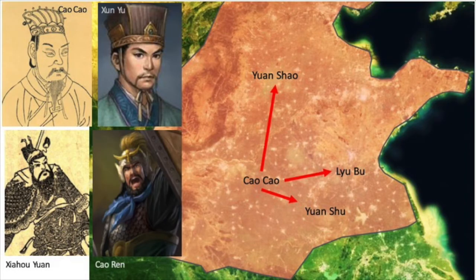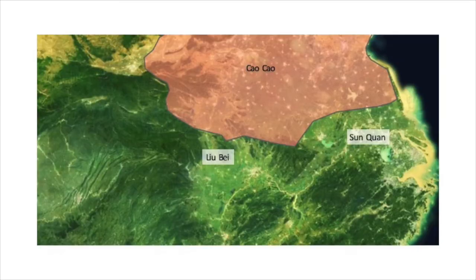Cao Cao was supported by a group of brave generals and military strategists, such as Xiahou Yuan, Xun Yu, and Cao Ren, so he quickly rose to power and defeated other powerful warlords like Yuan Shao, Yuan Shu, and Lü Bu. By the year 205, Cao Cao had generally pacified northern China. In the south, however, two other powerful warlords were still resisting. They were Liu Bei and Sun Quan.